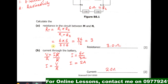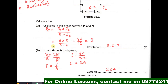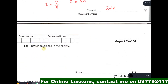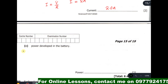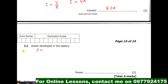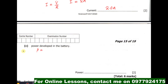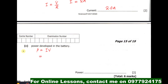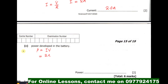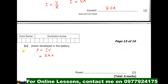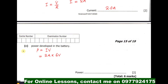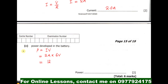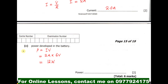Part c: we are calculating the power developed in the battery. Power has many formulas, but in this case we use P = I × V. Current is 2 amps and voltage is 6 volts. So 2 times 6 equals 12. The power is 12.0 watts.